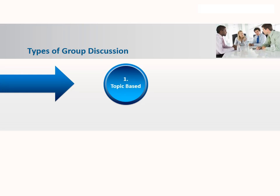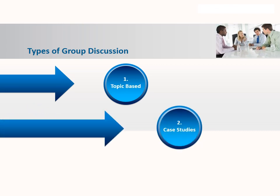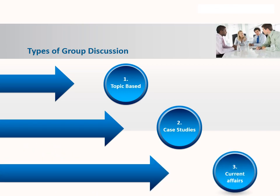What are the types of group discussions? Group discussions are typically of three types. Number one: topic-based — they give a topic which could be of any kind: socio-political, economical, technological, environmental, national, or international context. If you are good at reading newspapers and keeping up with the latest magazines and journals, you are ready for group discussion and will be able to comment on various topics with ease.